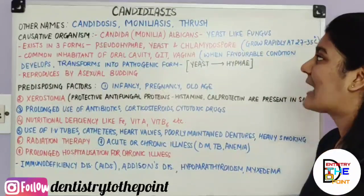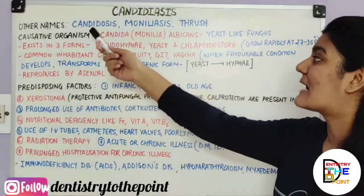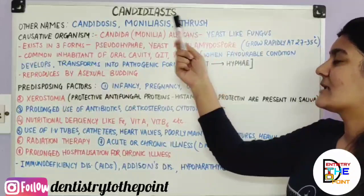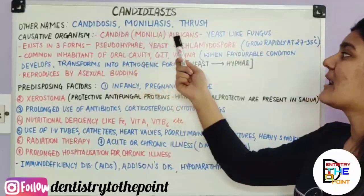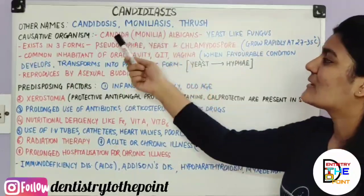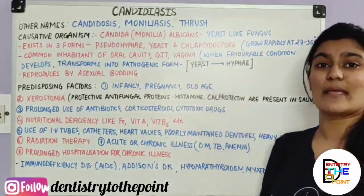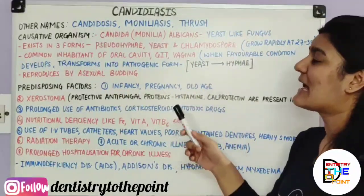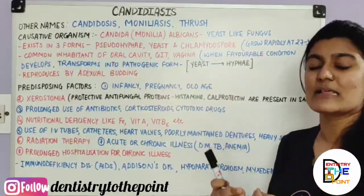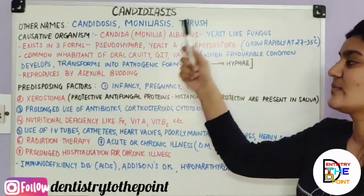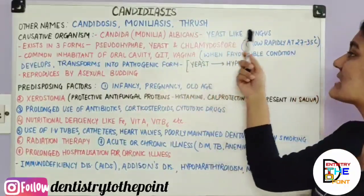Candidiasis, as the name suggests, has three other names: Candidosis, Moniliasis, and Thrush. Candidosis and Moniliasis are named because it is caused by an organism called Candida albicans, also known as Monilia albicans. Thrush is the name given by a mycologist who studied Candidiasis and named it after the clinical patches and manifestations he observed. The causative organism is Candida or Monilia albicans, which is a yeast-like fungus.